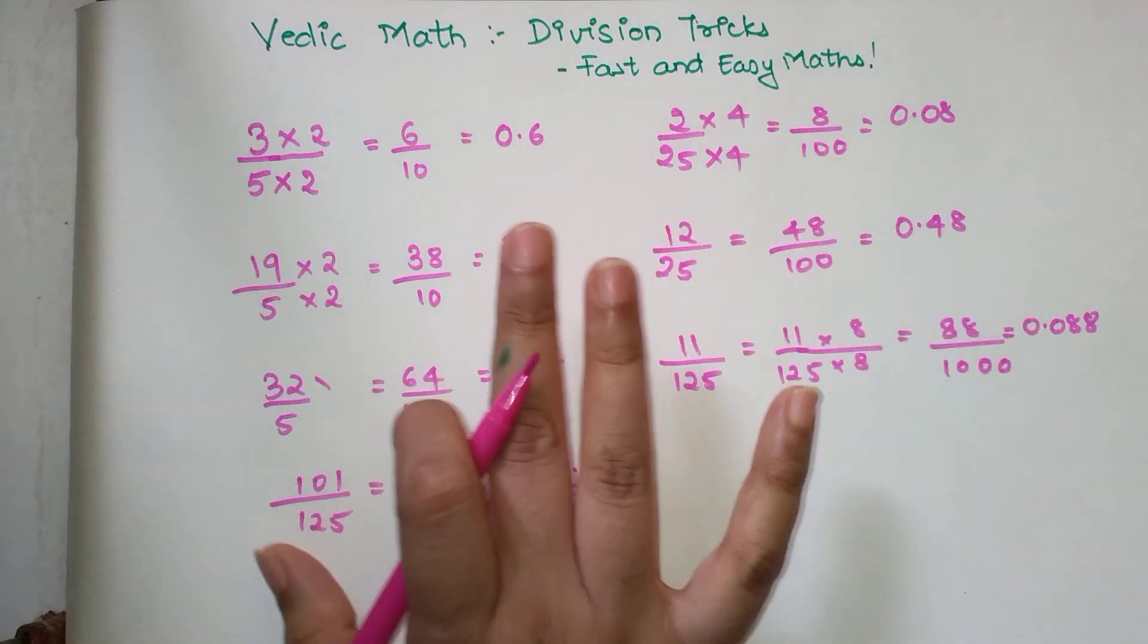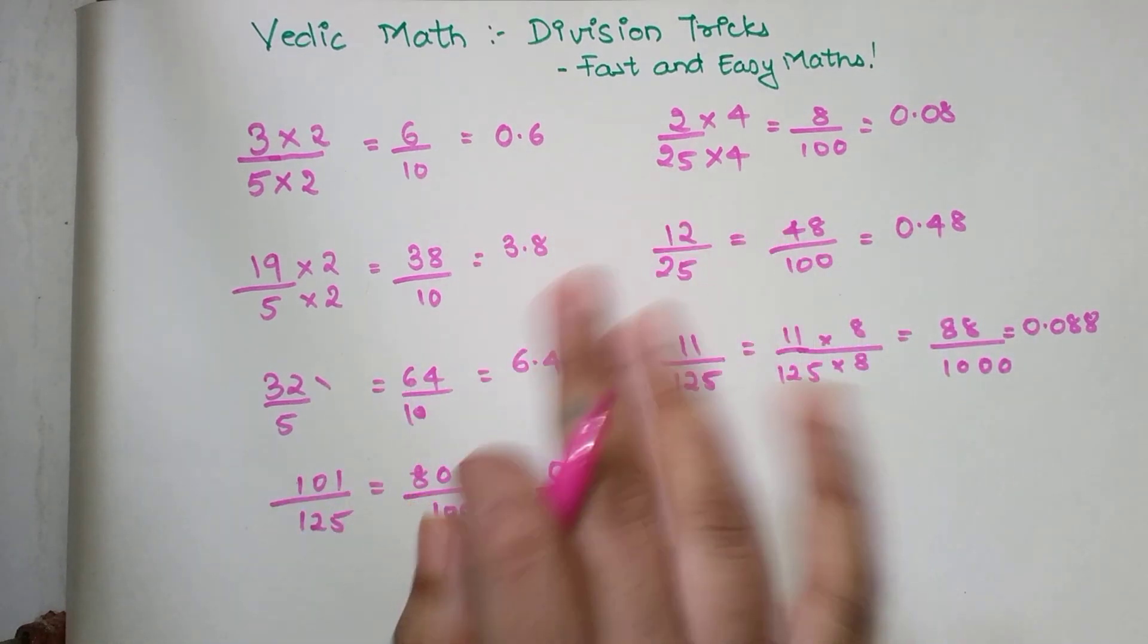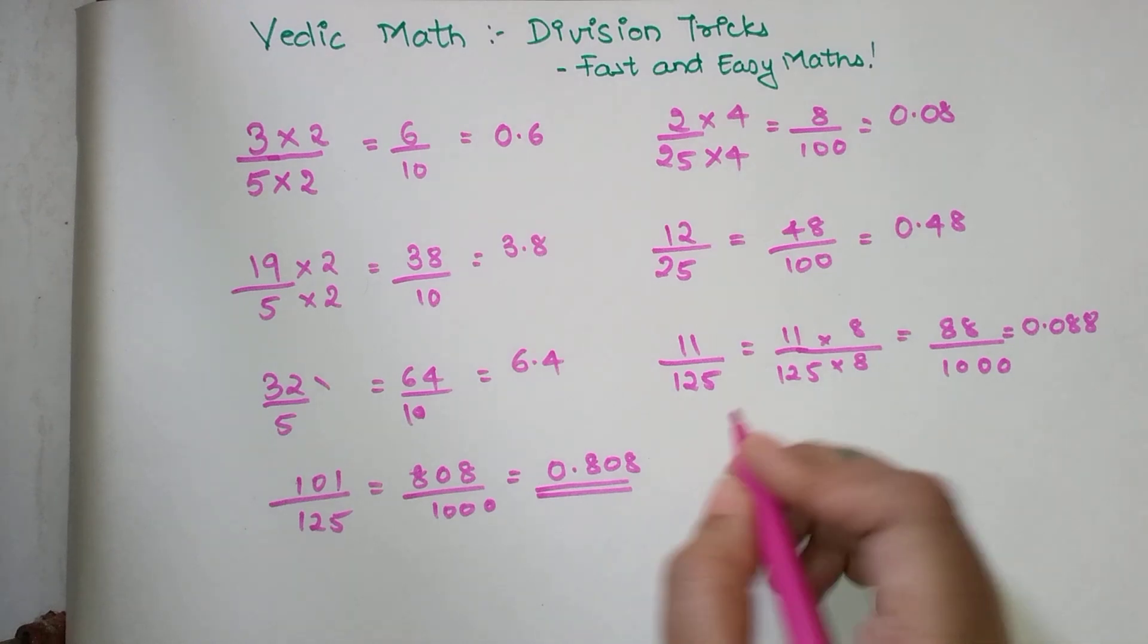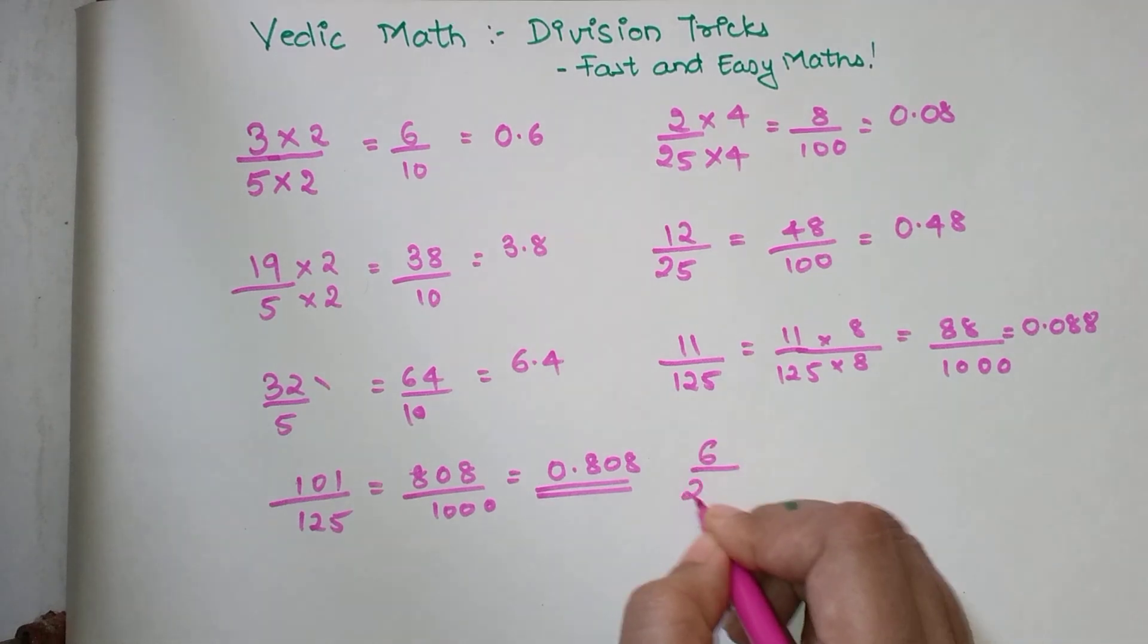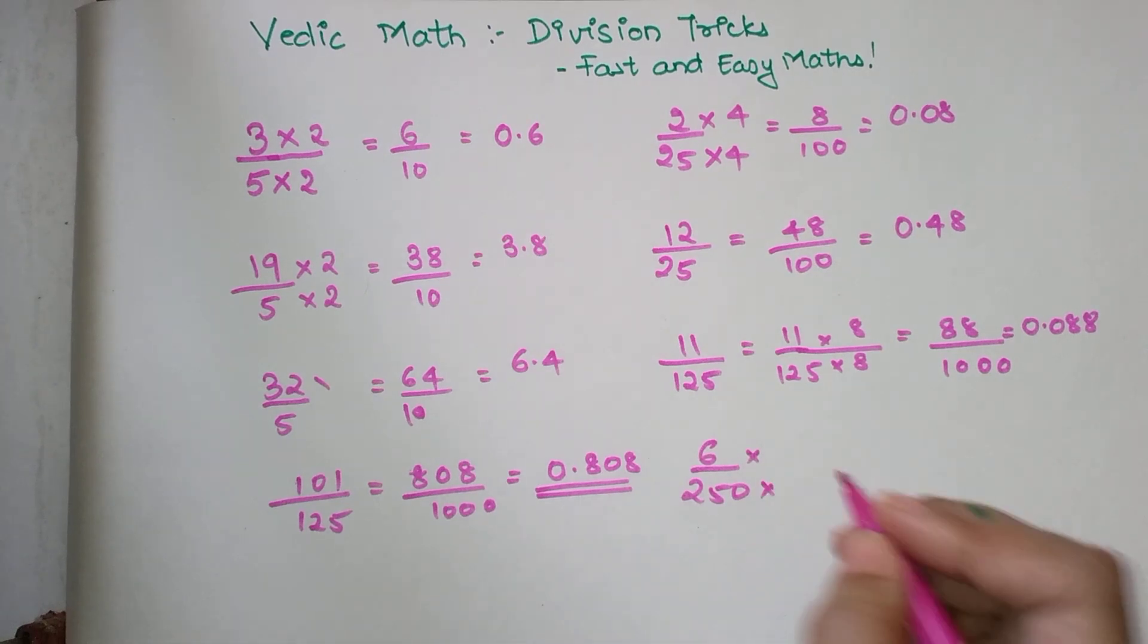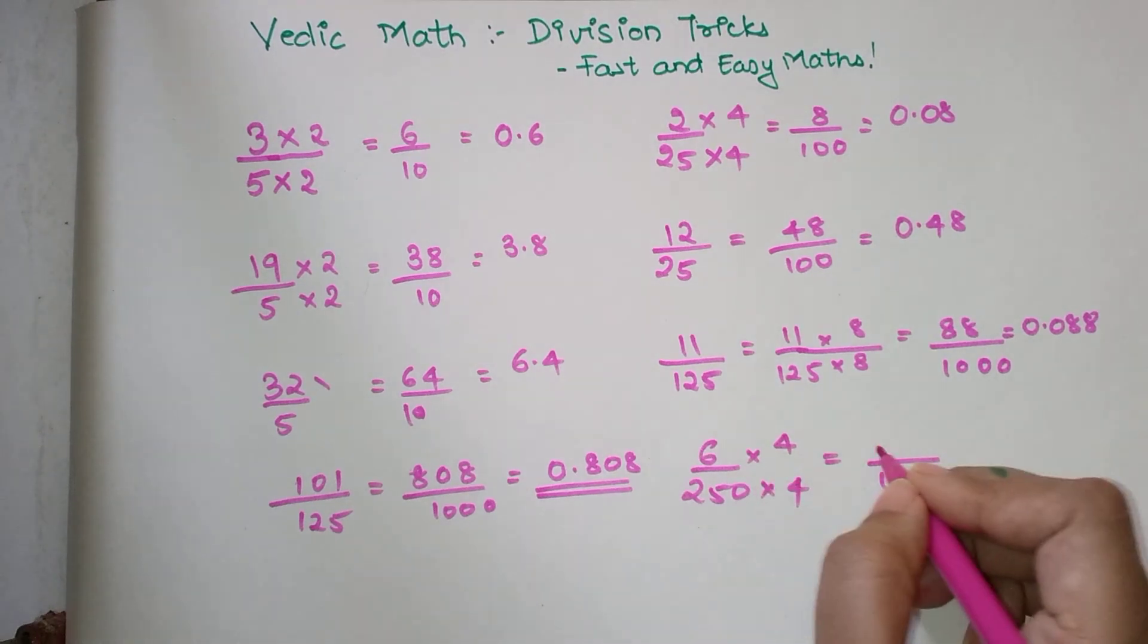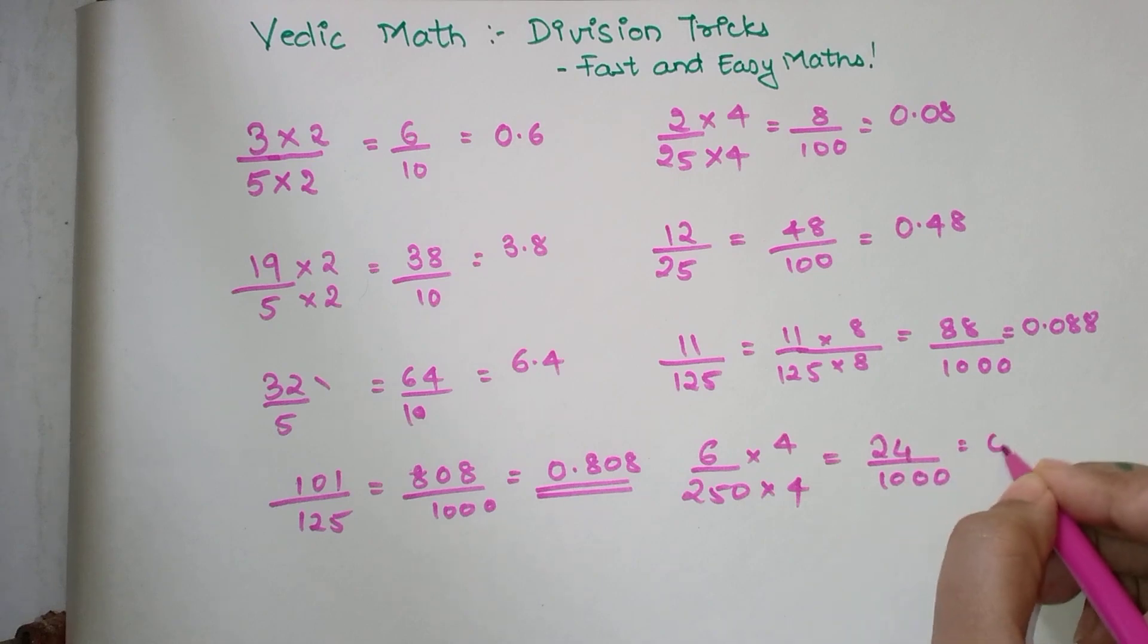Let me tell you one more trick. If you had to divide 6 upon 250, we multiply by 4. When I multiply by 4, the denominator becomes 1000, so 6 into 4 is 24. My final answer is 0.024.